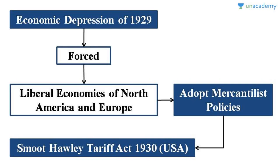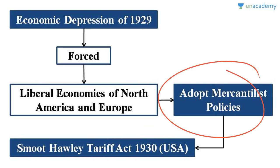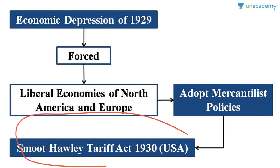The economic depression forced even the liberal economies of North America and Europe to adopt mercantilist policy and safeguard domestic industries from foreign imports. This process was initiated first by the USA when it passed the Smoot-Hawley Tariff Act in 1930. This act raised the average tariff on imported goods coming into the USA to a very high level.